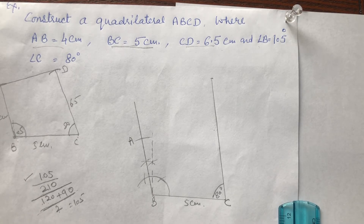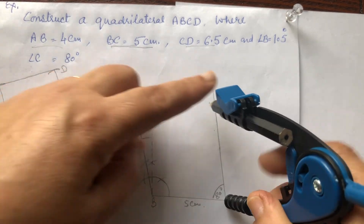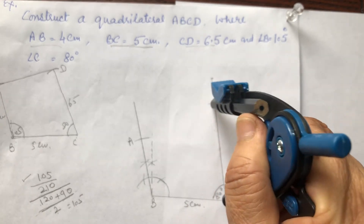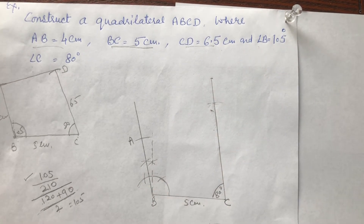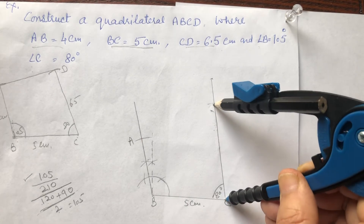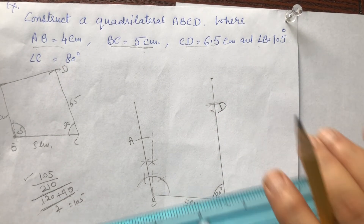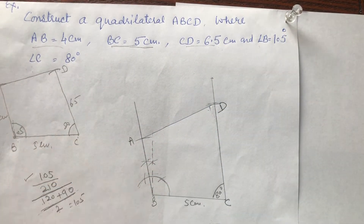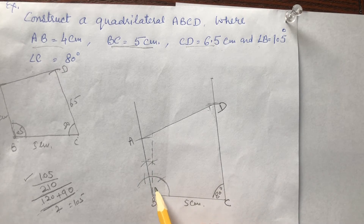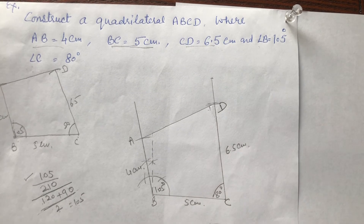Now CD is equal to 6.5 cm, so we will take CD equal to 6.5 cm. This is the point D. Join A and D. This angle is 105 degrees. Write down all the measurements: AB is 4 cm, CD is 6.5 cm — and there is no measurement given for AD.